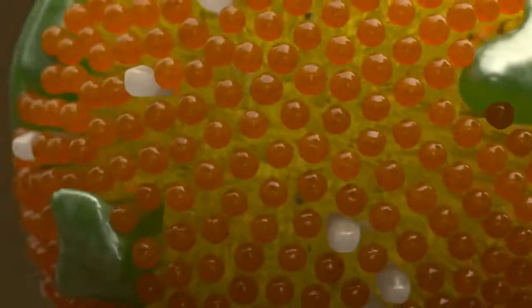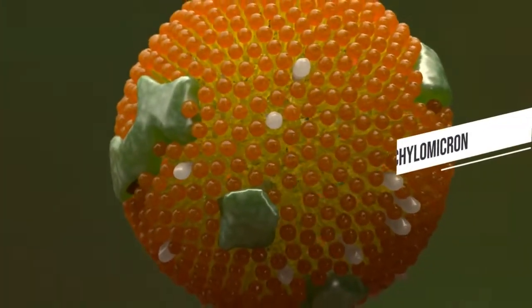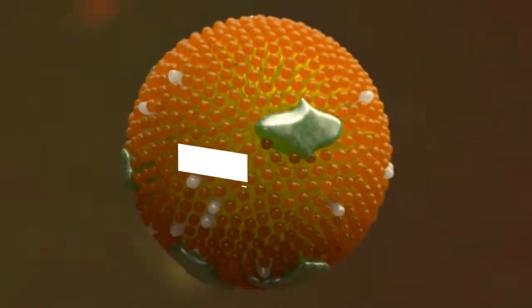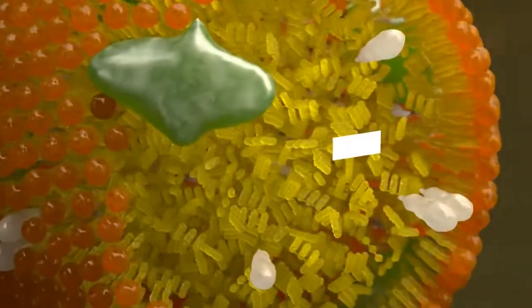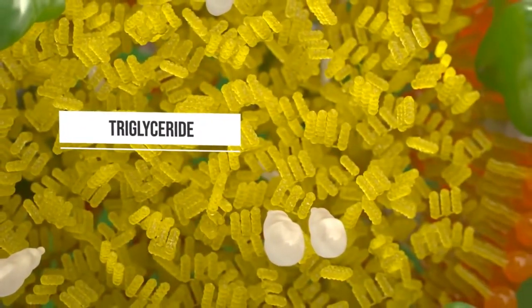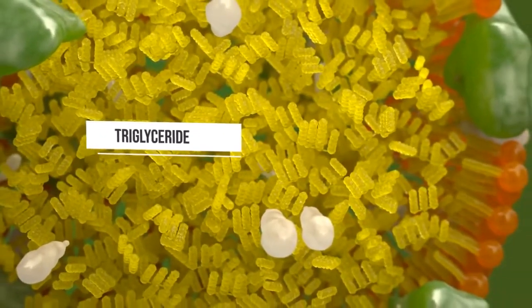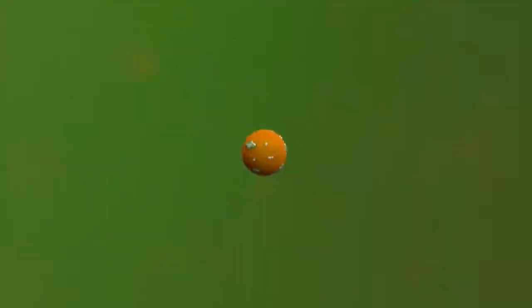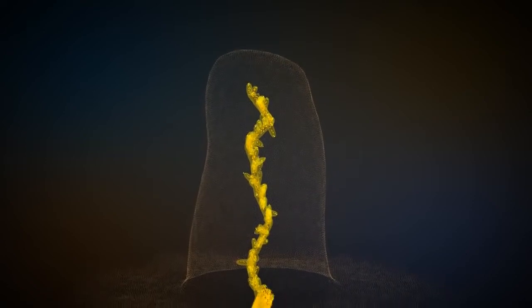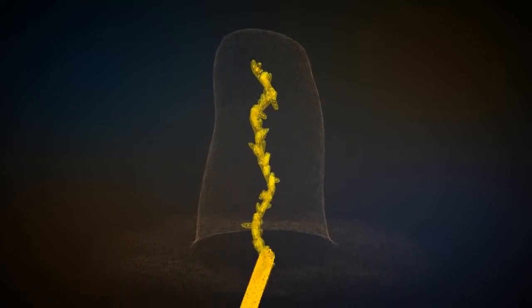Fats are transported by chylomicrons, which are lipoproteins. The triglycerides to be transported are virtually enclosed in the lipoprotein. Chylomicrons and triglycerides are then transported through the lacteal of the villus.